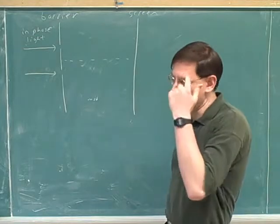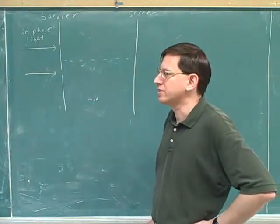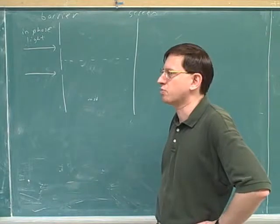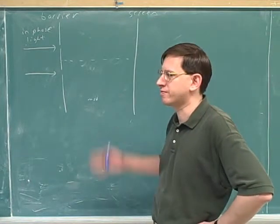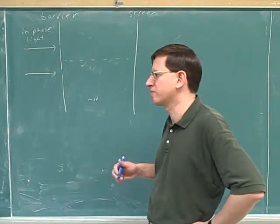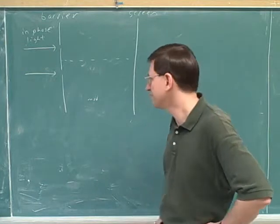Interference always occurs when you have two different beams. How did we get the two different beams in the thin film? We had two different beams because one portion of the beam reflected from the first surface of the film and the other portion reflected from the second surface of the film.